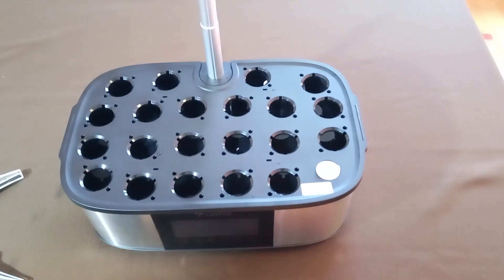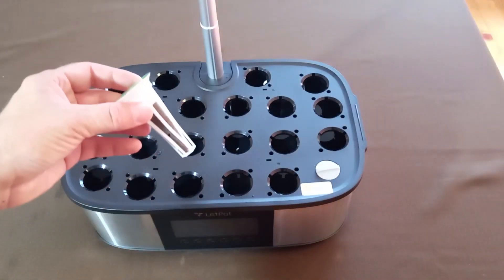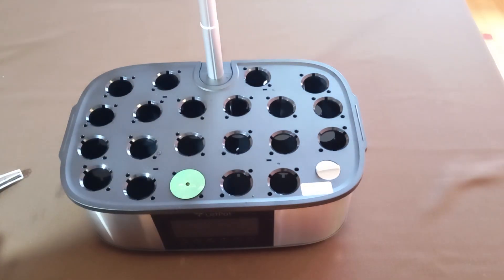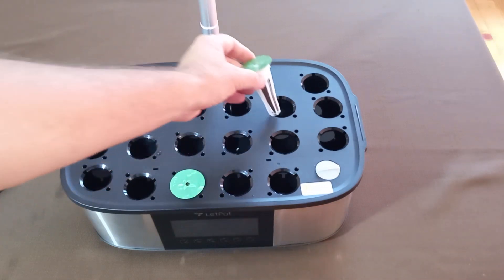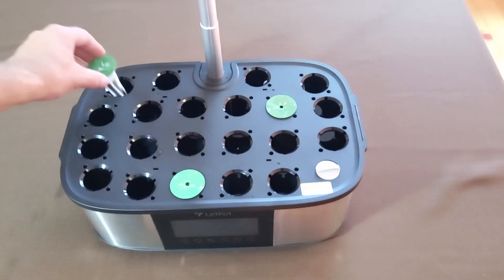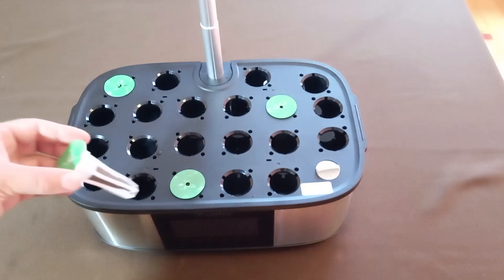Step 4. Place the seed pods inside. Put 2 to 3 seeds in each growing sponge. Afterward, insert the sponges into the baskets and affix the stickers that are included in the kit to the top. Next, position the seed pods into the openings of the growing deck. Although there are 21 holes available, it's recommended to grow up to 10 plants in this space for best results.